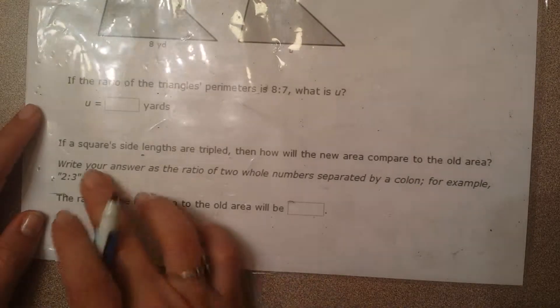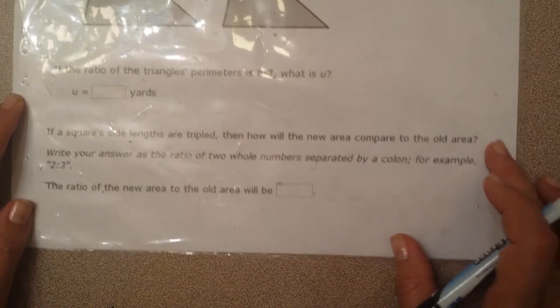I thought I'd do just one more example. So if a square's side length is tripled, how would the new area compare to the old area?